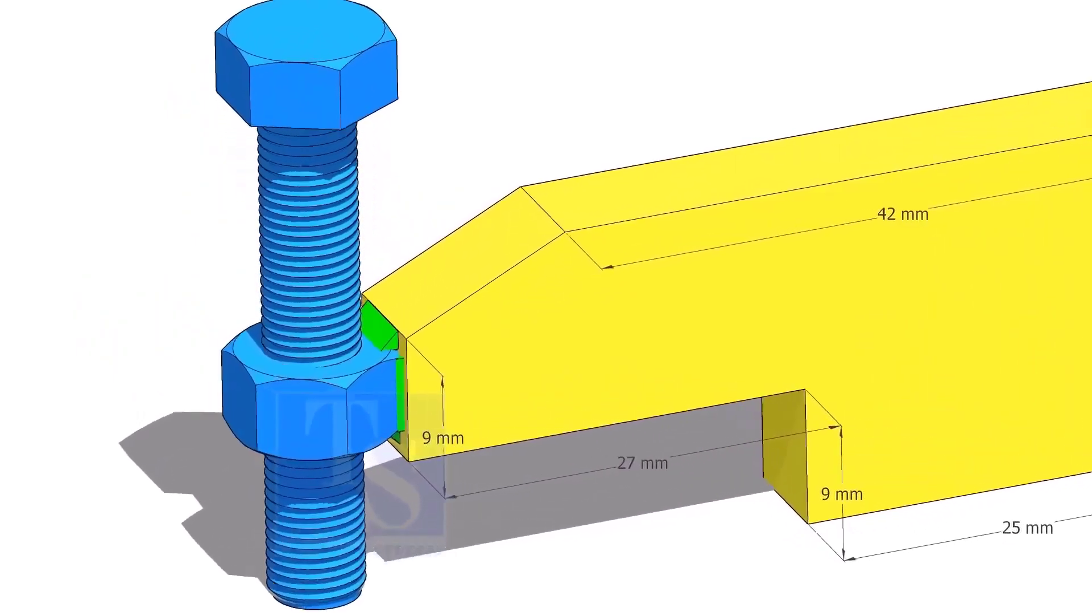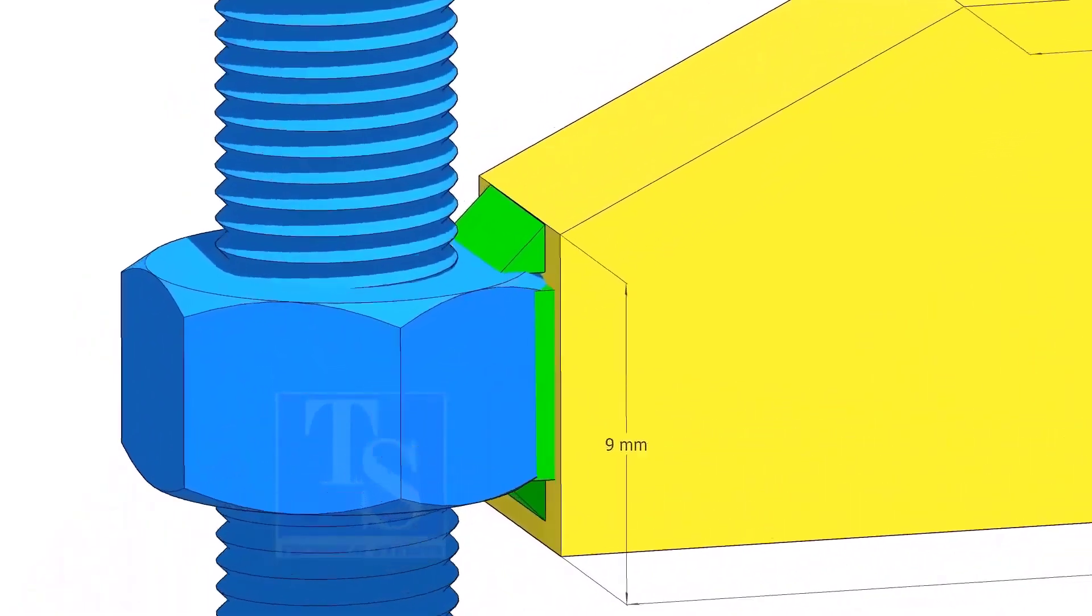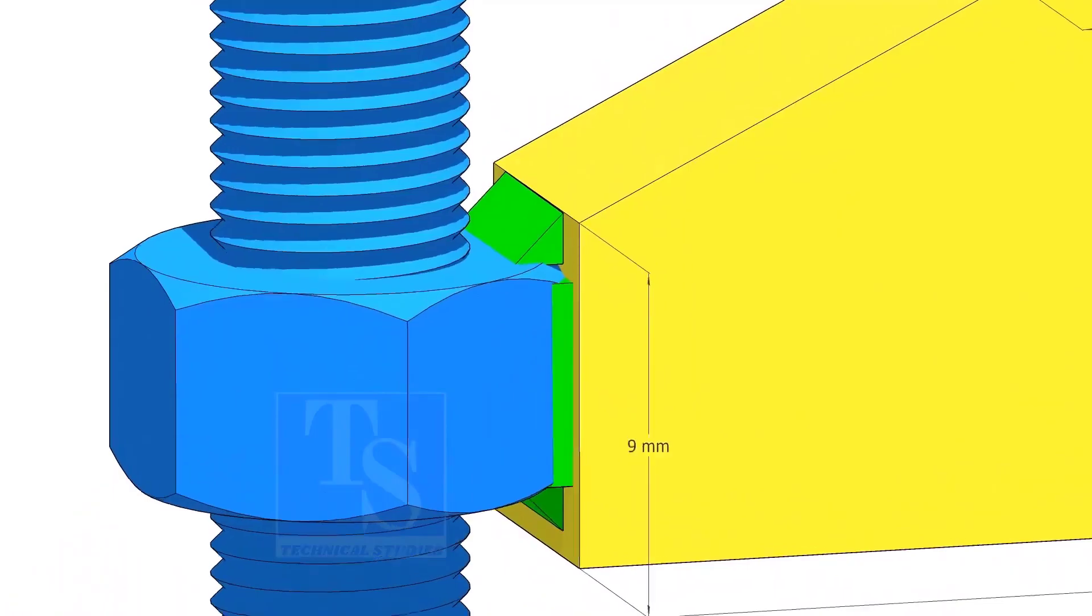For smaller pipes, the bolt size shall be half inch or 12 mm, the length shall be about 3 inches or 75 mm.